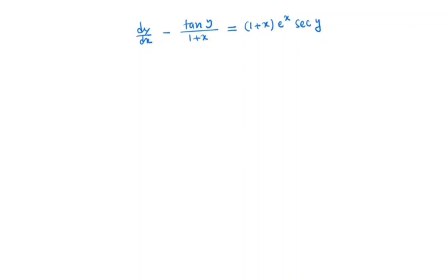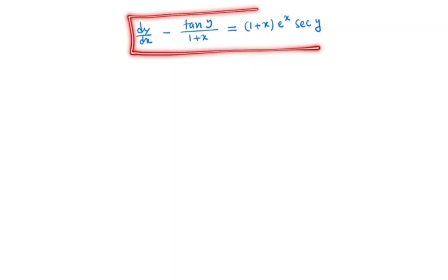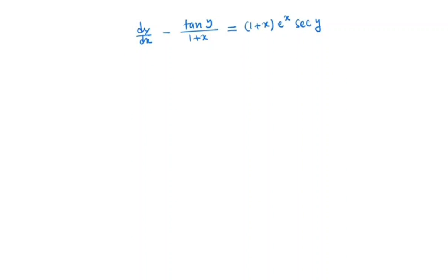Hi everyone, welcome to my channel. Now we will solve the following: dy/dx minus 10y divided by (1+x) is equal to (1+x)^x times sec y.